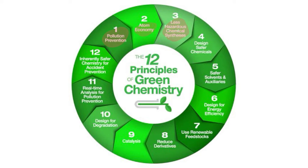Number three is less hazardous chemical syntheses. Whenever practical, synthetic methods should be designed to use and generate substances that possess little or no toxicity to human health and the environment. Number four is designing safer chemicals: chemical products should be designed to affect their desired function while minimizing their toxicity. Number five is safer solvents and auxiliaries — the use of auxiliary substances like solvents or separation agents should be made unnecessary wherever possible.